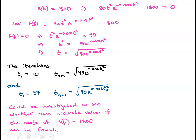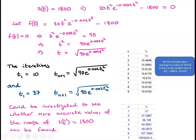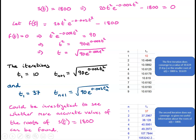Looking at the first iteration, the values shown in the table converge to approximately 10.62. Looking at the second iteration, we can see that it does not converge, so we gain no useful information from it about the roots of s(t) = 1,800. We saw in the previous video that Newton-Raphson is a very useful iteration method for solving f(t) = 0, so it might be worthwhile seeing whether Newton-Raphson is better than the iterations we have just tried.